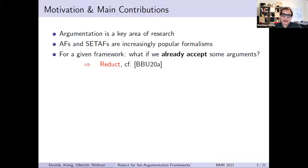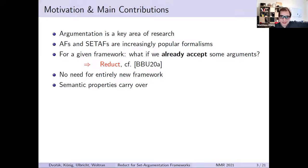The setting where we need the reduct is when you already have an argumentation framework and ask: what if you already accept some of these arguments? Do you have to come up with a whole new framework to perform the remaining reasoning on, or can you do something with it? In 2020, Baumann, Prefke, and Ulbricht invented the notion of the reduct for standard Dung-style argumentation frameworks, and we generalized it to ZETA-Fs. The idea is that if you already accept some arguments but are undecided about the rest, you do not need to construct an entirely new framework — you can make syntactic modifications on the existing one and then reason on what remains: the reduct.